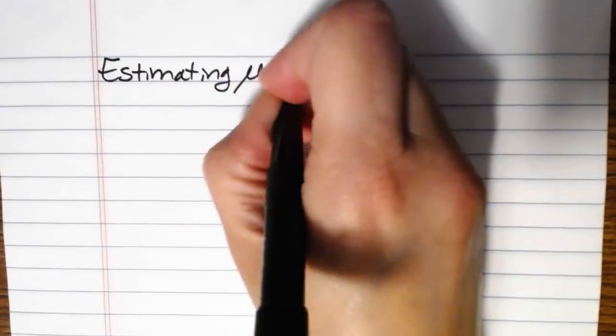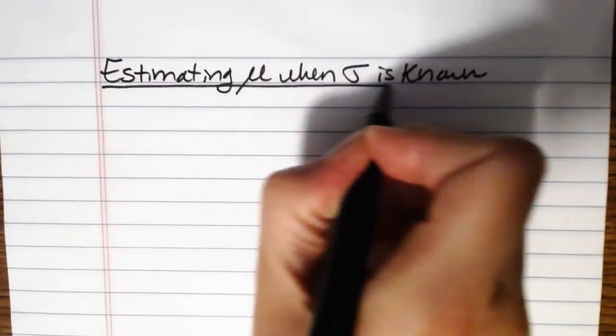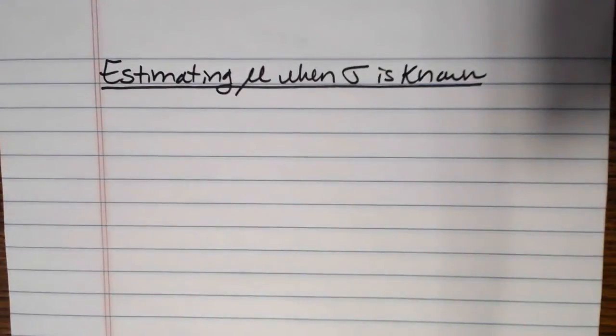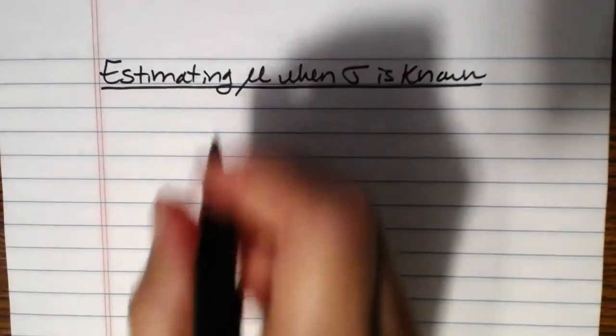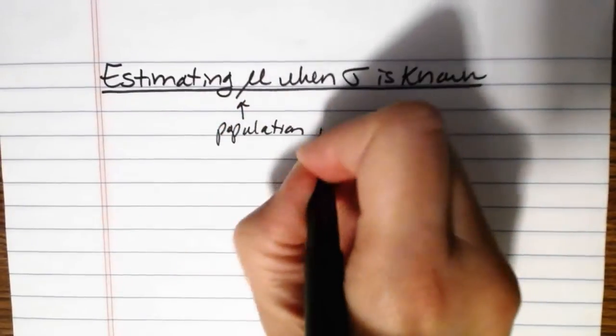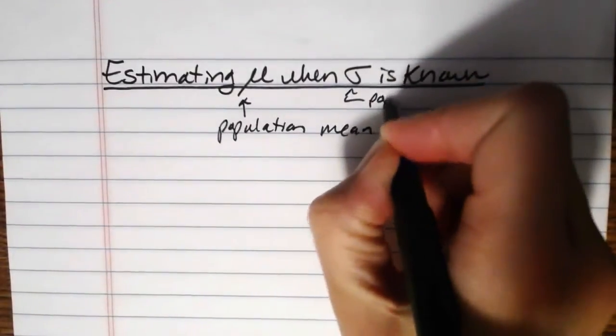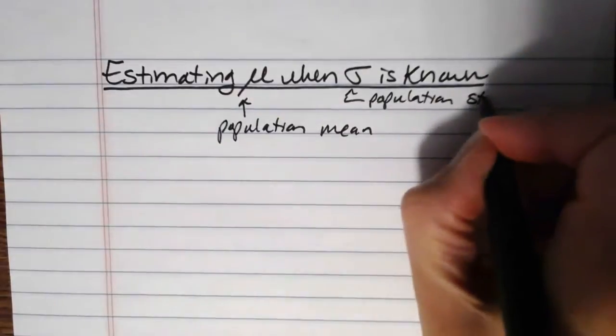In this video, we're going to be taking a look at estimating mu when sigma is known. Basically, as we go throughout the chapter on estimation, we'll be looking at different kinds of intervals we could create. If we want to estimate mu when sigma is known, we're trying to estimate the population mean when we know the population standard deviation.